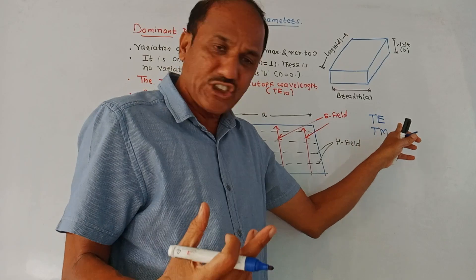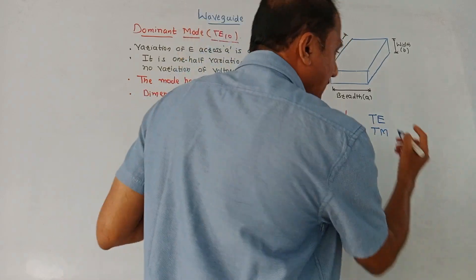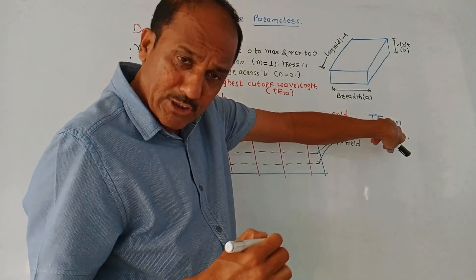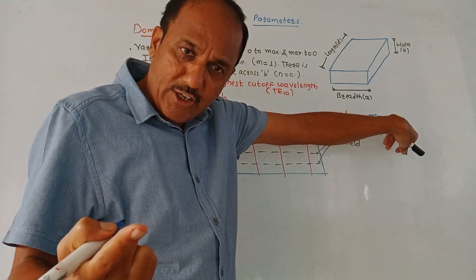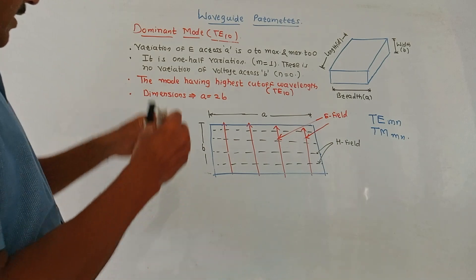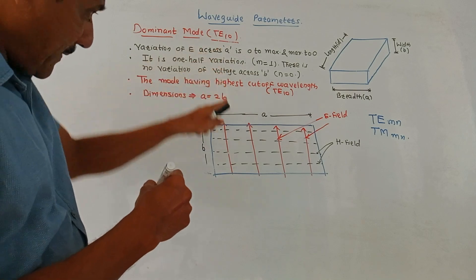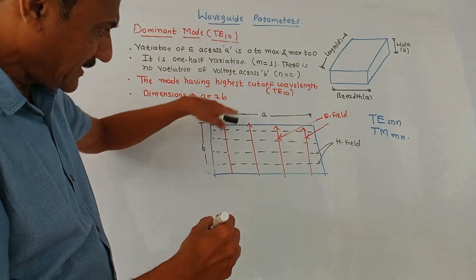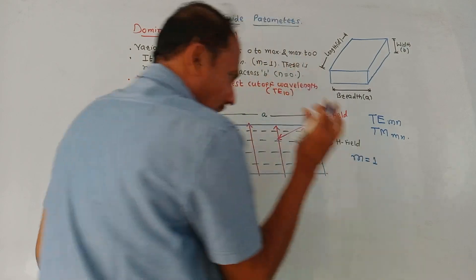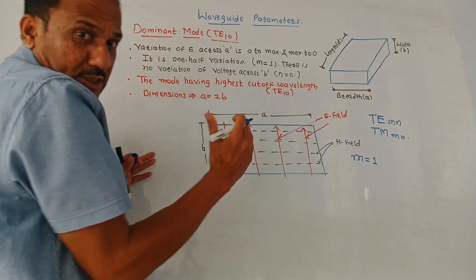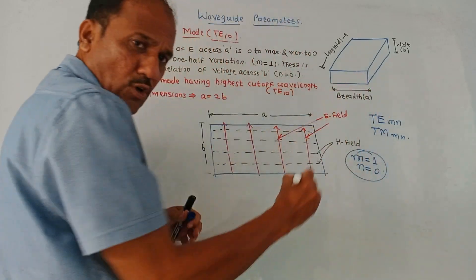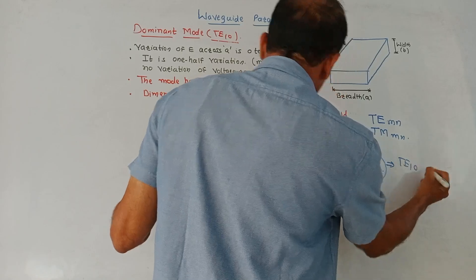Remember the notations: the transverse electric mode is denoted by TE_mn and transverse magnetic mode is denoted by TM_mn. Whenever EM waves start travelling through the waveguide, a number of different patterns are generated — these are called modes. M represents the number of half-cycle variations in one direction, and N represents the number of variations in the other direction. For the dominant mode in a rectangular waveguide, it is the TE10 mode, with dimensions A = 2B.